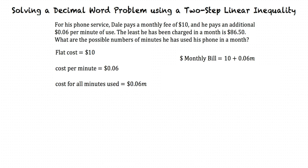In our problem, it says that the smallest amount he has ever been charged is $86.50. This means that his bill has always been greater than or equal to $86.50.